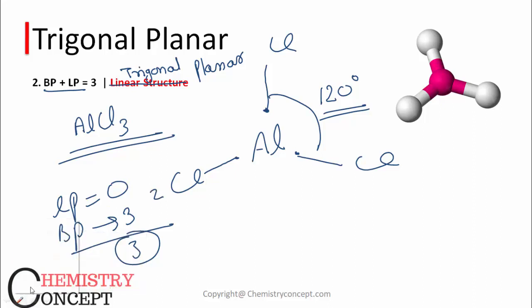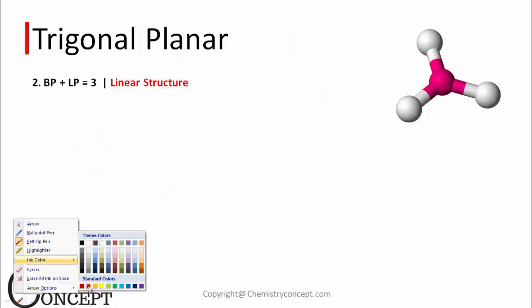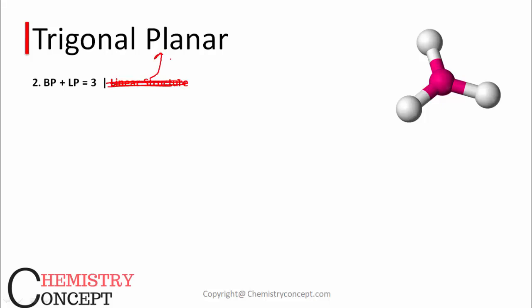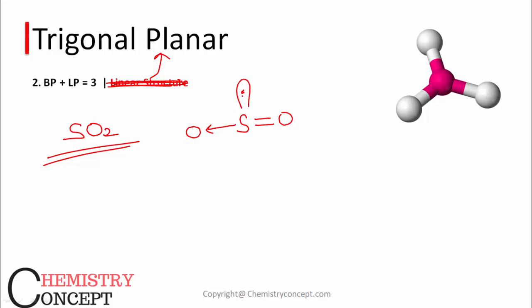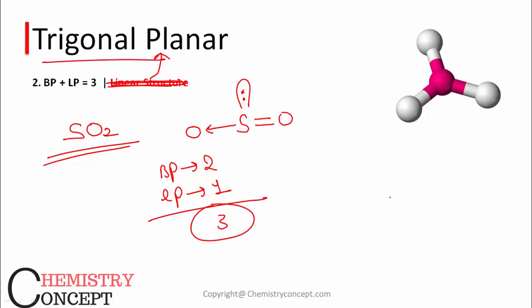Another example of trigonal planar is sulfur dioxide. Sulfur has 6 electrons: 2 are used to form a double bond with one oxygen, 2 are used to form a coordinate bond with another oxygen, and 1 lone pair is left. So bond pairs are 2 and lone pairs are 1. Sum is 3, so the structure is trigonal planar — two oxygen atoms on two corners and the lone pair on the third corner of the triangle.